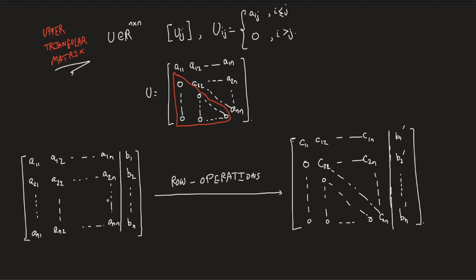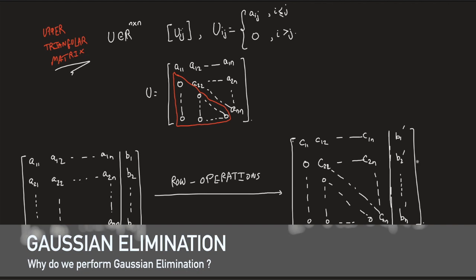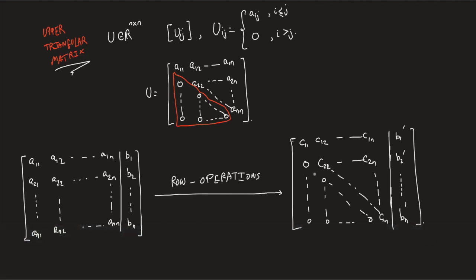You perform row operations on the original augmented matrix such that you achieve a form that looks like this, an upper triangular matrix right here, and some coefficients in the last column. One can easily see that dealing with the upper triangular form is way easier than the original form. Why is that? That you can perform back solving. That is, you start by the last equation, you solve for x_N by simply noting that x_N is b_N prime over C_N,N, plug it back in the row just before it, and solve for x_N minus one in a similar manner, and up till you reach x_1. It's way easier to solve it.